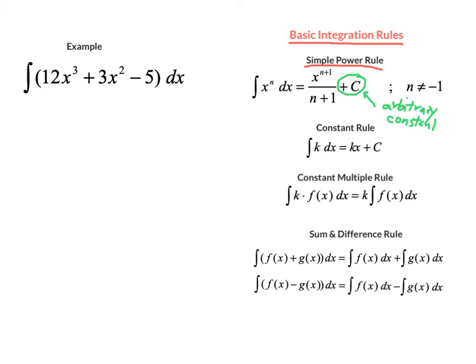There is one exception to the simple power rule. If your exponent is negative 1, you can't use the basic power rule, because that's going to result in division by 0, which is undefined. But for any other exponent — whether it's a positive integer, a negative integer, a rational exponent — as long as the exponent is not negative 1, the simple power rule works. That's the fundamental rule that we need here.